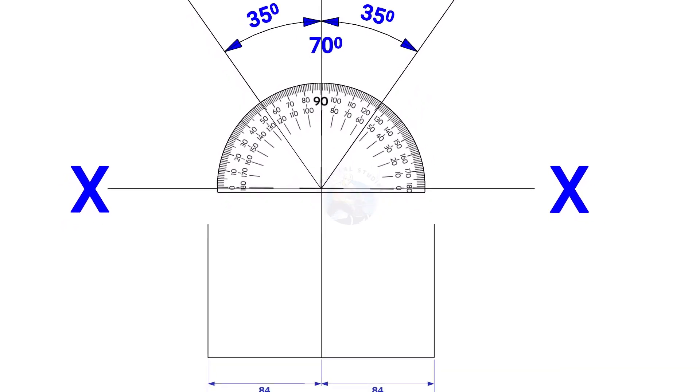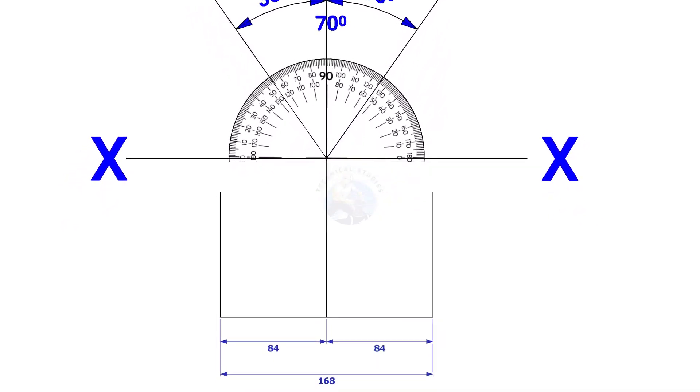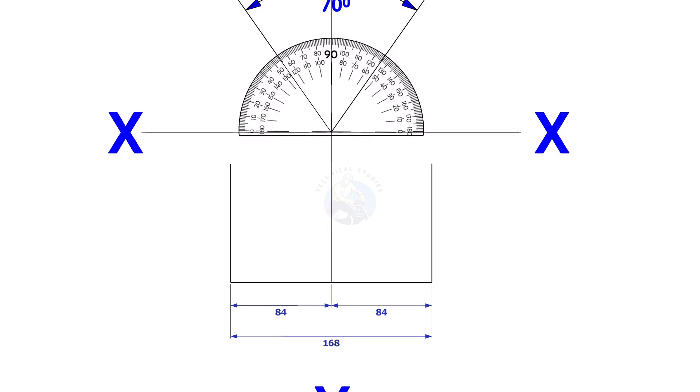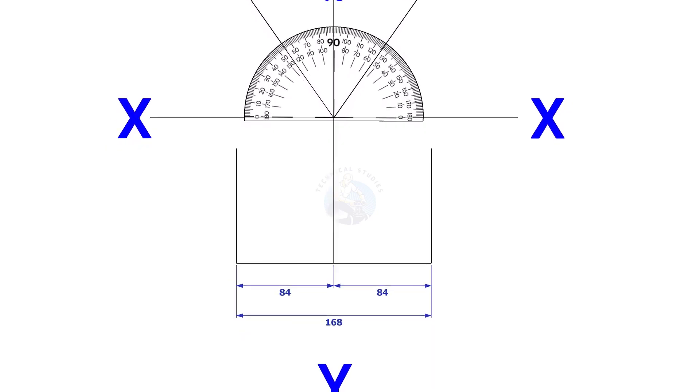Mark 84mm each on both sides of the YY axis, that is the outside diameter of the header. Draw perpendicular lines on these marks as shown.